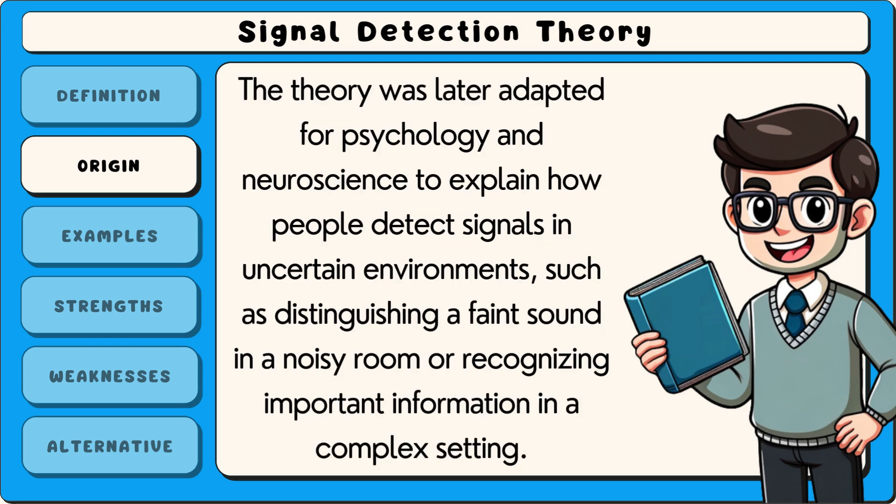The theory was later adapted for psychology and neuroscience to explain how people detect signals in uncertain environments, such as distinguishing a faint sound in a noisy room, or recognising important information in a complex setting.